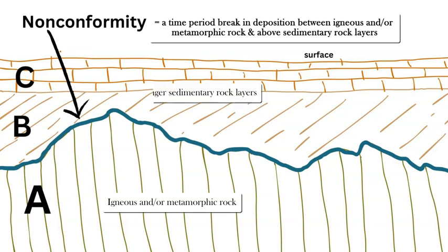The next type is called a nonconformity. This is where you have different types of rocks on either side of the unconformity. Sedimentary rock sits above the unconformity line, while an igneous or metamorphic rock layer A is older and deeper below. That lower layer was eroded and weathered at the surface, and then subsequent younger sedimentary rocks were laid on top of the igneous or metamorphic rock — similar to a disconformity but involving igneous or metamorphic rock at the bottom.